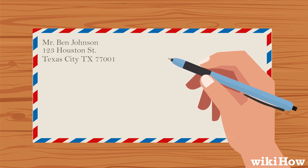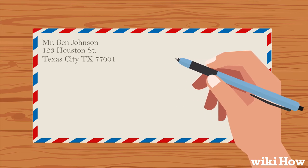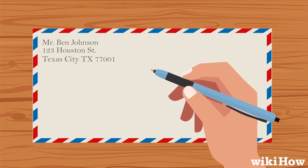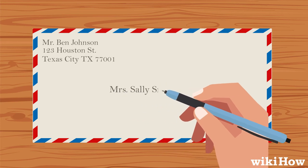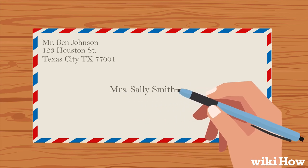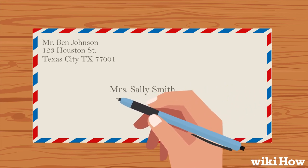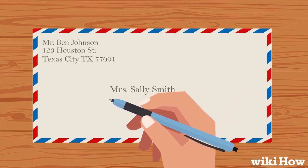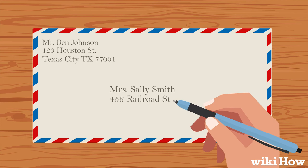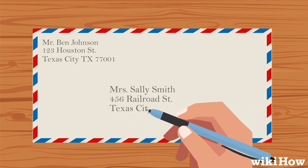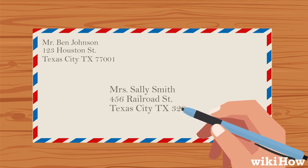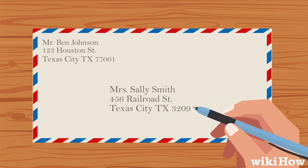To write the mailing address, print the name of the person you're sending the letter to in the center on the front of the envelope. Write the recipient's street address on the line below their name. Finally, write their city, state, and zip code on the third line.